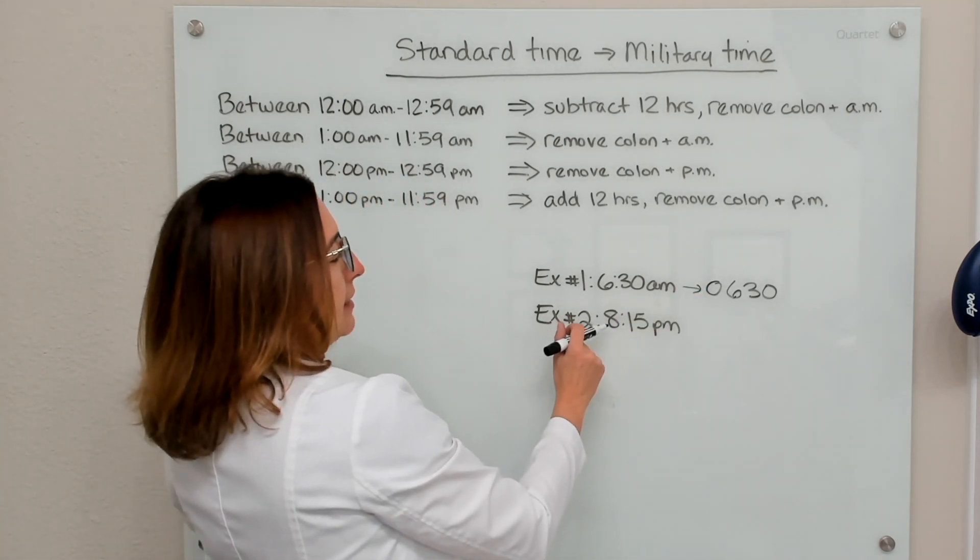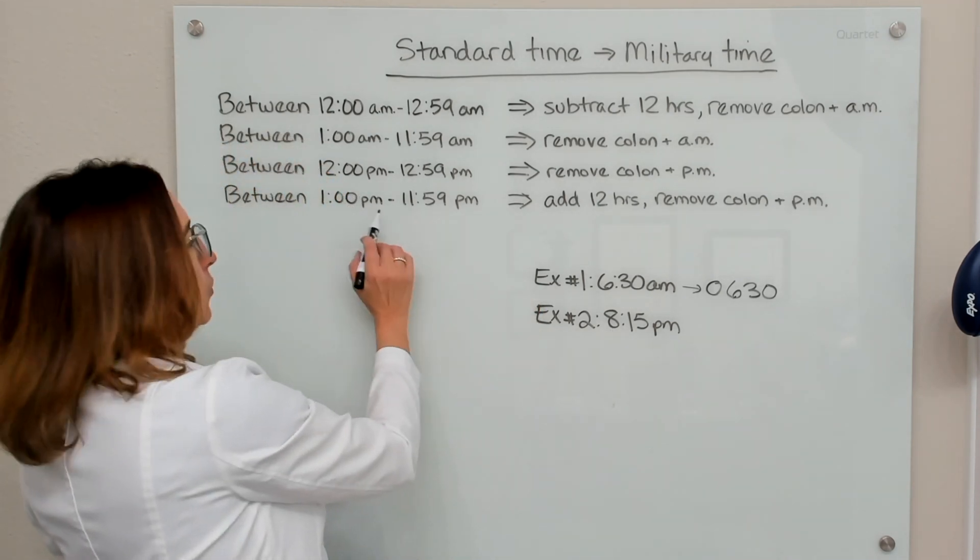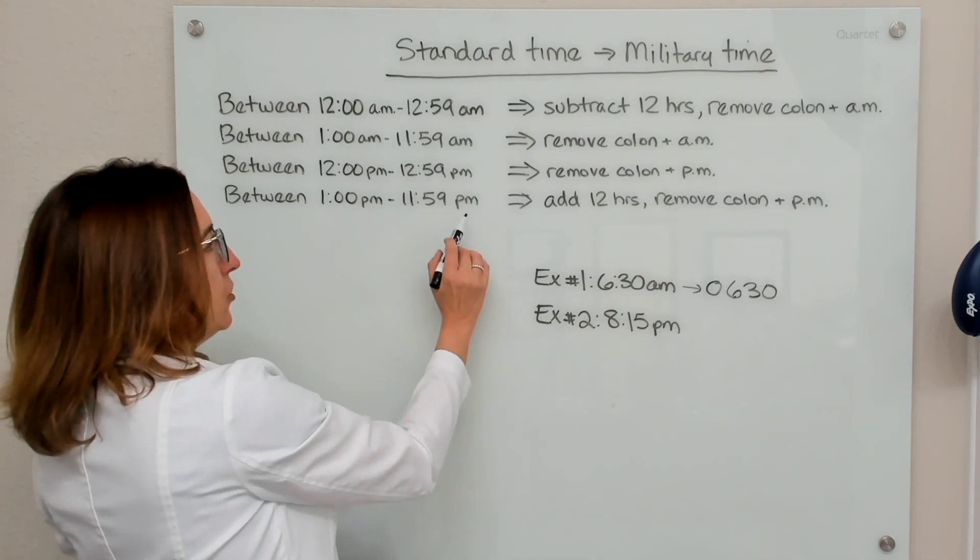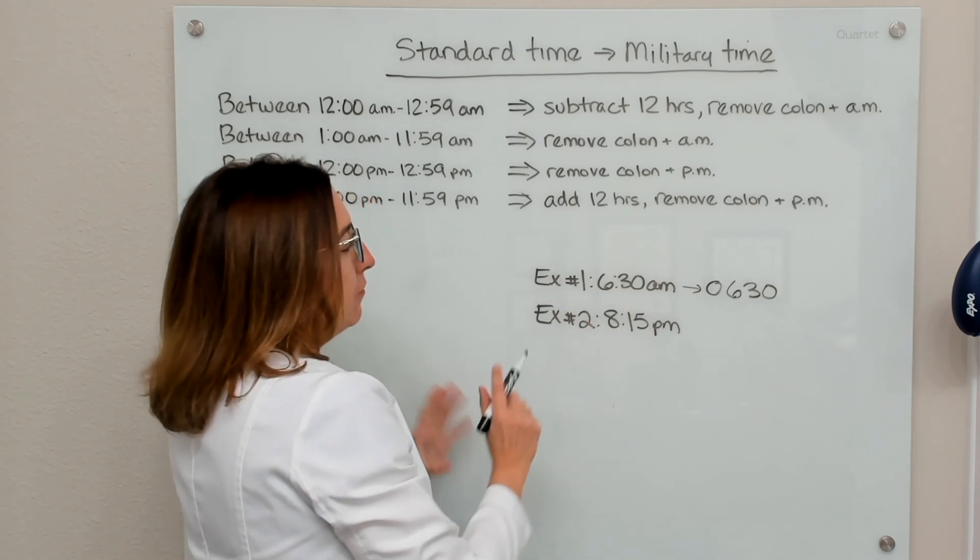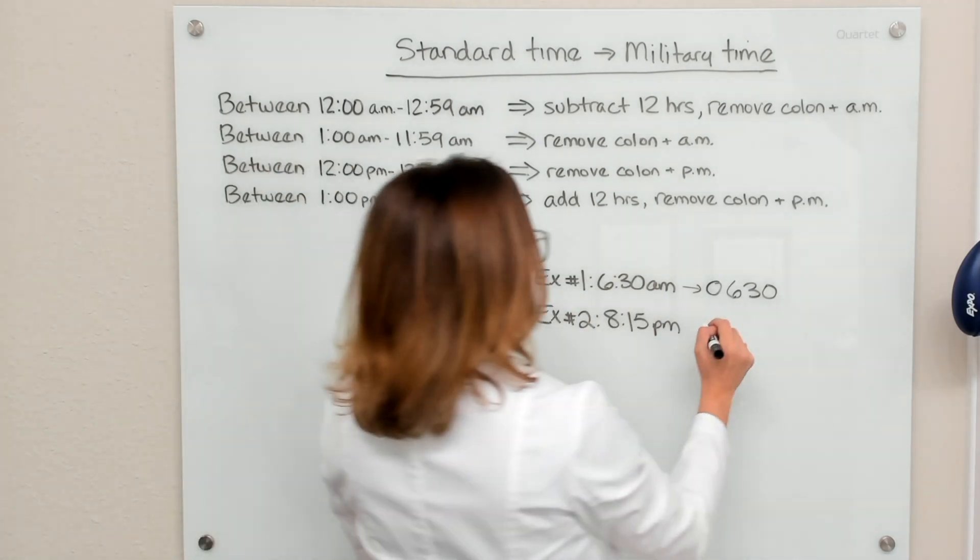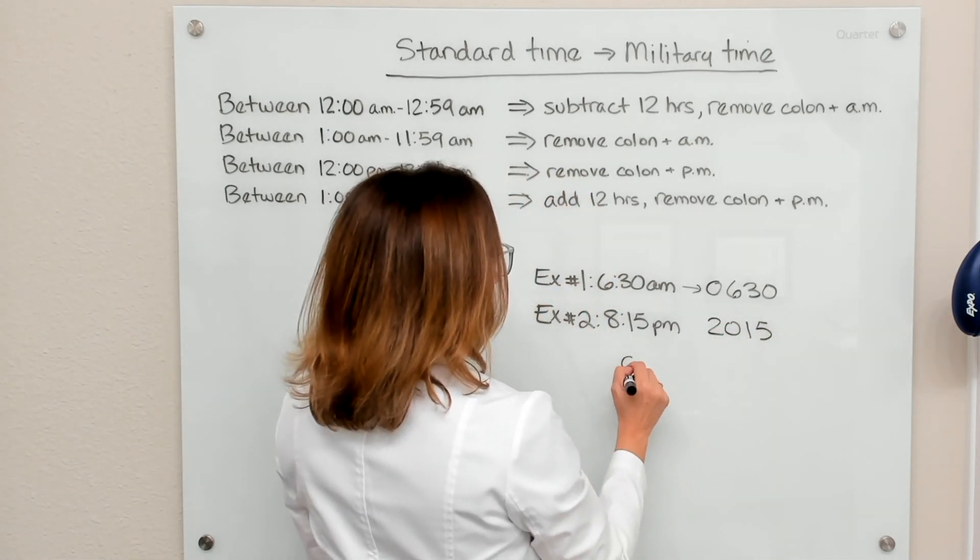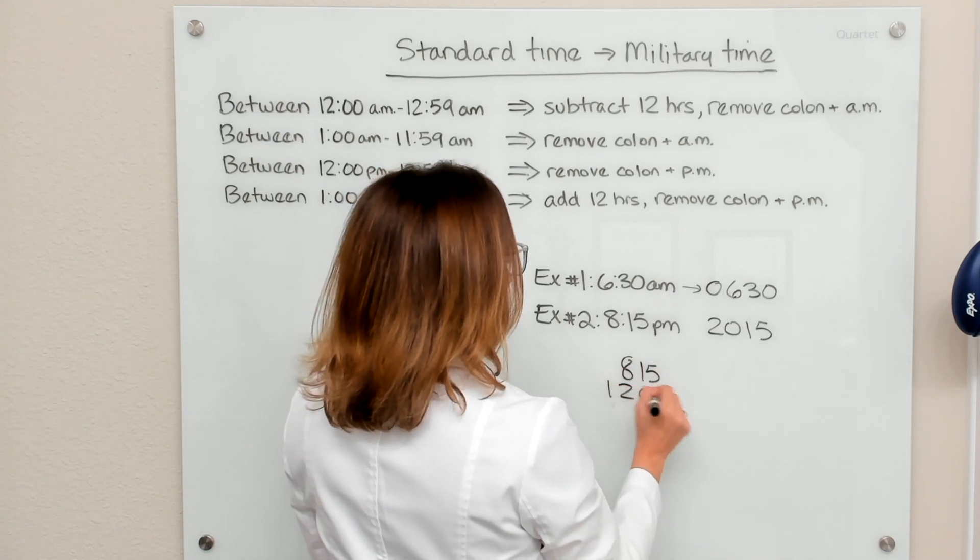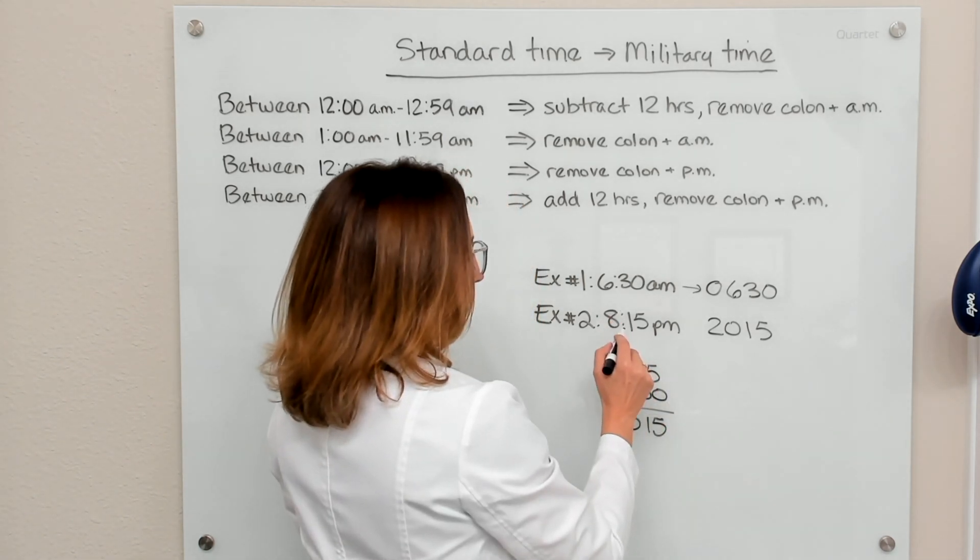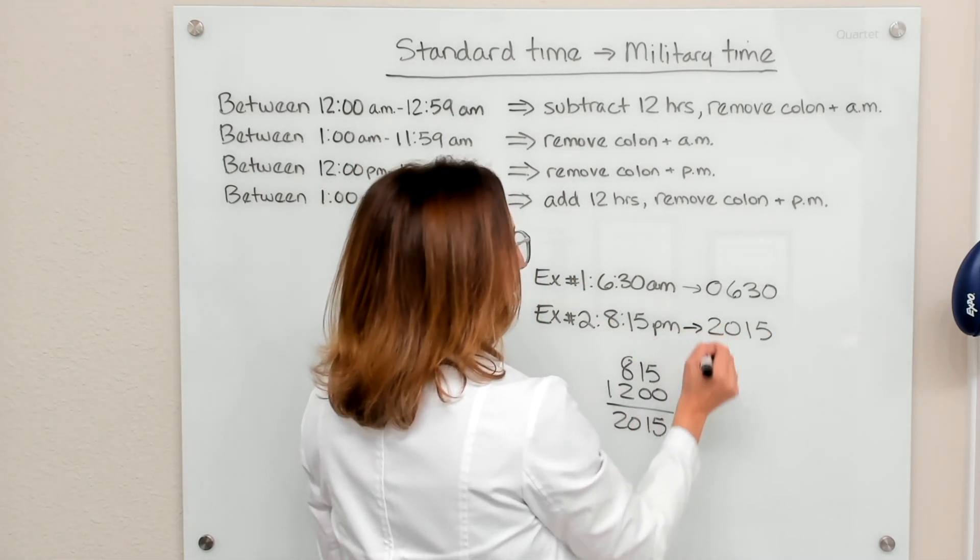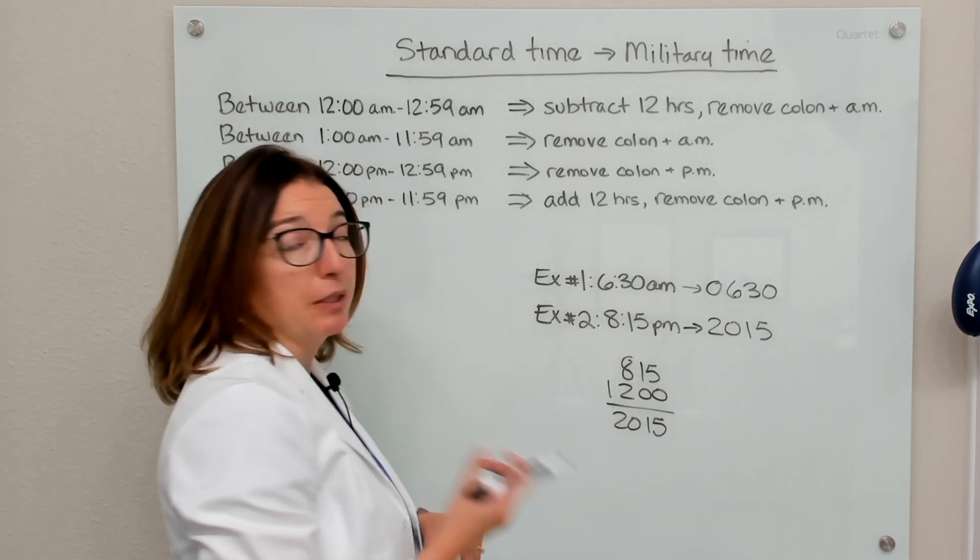Let's work through our second example. Here we have a standard time of 8:15 p.m. So according to our rule here, that falls within this range, we need to add 12 hours, remove the colon and the p.m. So if I add 12 hours onto this, I end up with 2015, right? So 8:15, 15 plus 12 equals 2015. And then I want to get rid of the colon and the p.m. So this becomes just 2015. So 8:15 p.m. equals 2015 in military time.